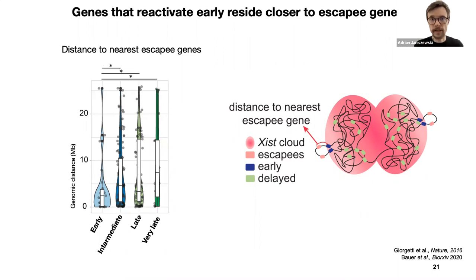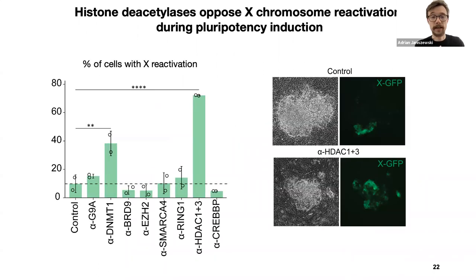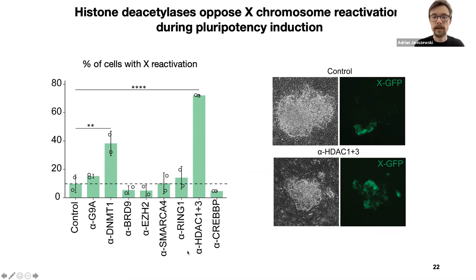This also suggests that 3D conformation and the location of a gene in 3D space might influence the stability of its silencing, which could have important implications in X-linked and other diseases. The next question was why most of the genes reactivate with delayed kinetics. To address this, I tested the effect of different chromatin regulators on reactivation kinetics. I observed that inhibiting DNA methylation promotes X reactivation, in line with previous research. But I also found that inhibiting histone deacetylases 1 and 3 strongly and significantly increases the rate of X reactivation, suggesting these enzymes could be an additional barrier to X reactivation during pluripotency induction.